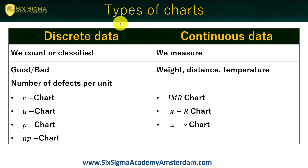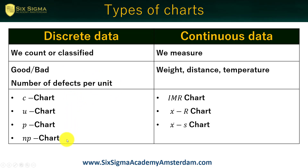In order to assess that variation, we need to make a chart, and that chart will depend on the type of data we are monitoring. There are two big families of data. On the left side, we have discrete data — the kind we count or classify: ABC, red/blue/yellow, good or bad, number of defects per unit. For this type of data we have the C chart, U chart, P chart, and NP chart. For continuous data — the full spectrum we actually measure, such as weight, distance, temperature — we have options depending on sample size: I-MR, X-bar R charts, and X-bar S charts.